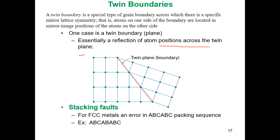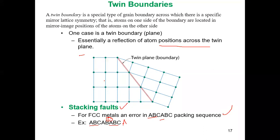There is also a stacking fault. In FCC metals, the proper stacking sequence is A-B-C-A-B-C. If this sequence is disrupted — for example, A-B-C becomes A-B — this is called a stacking fault.